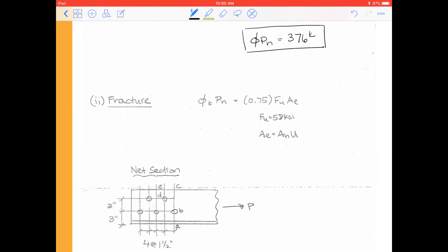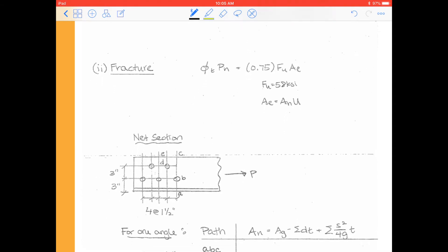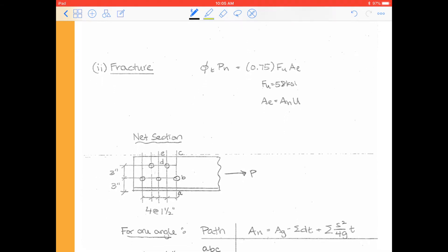Alright, now we move on to our fracture. So again, we'll review how do we do our fracture calculation. So φPn for fracture is going to be 0.75 times Fu times Ae, where Ae is our effective area. And for an A36 steel, Fu is 58 ksi. And again, we can check out table 2-4 for this information in our manual if you need to look these values up. And then our effective area is our net area times our u, which is our shear lag reduction factor.